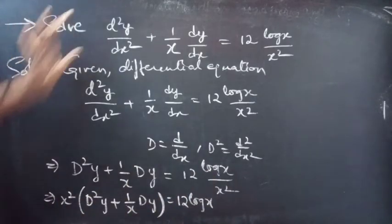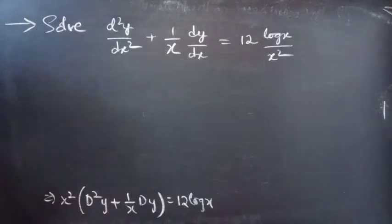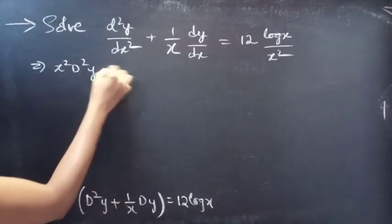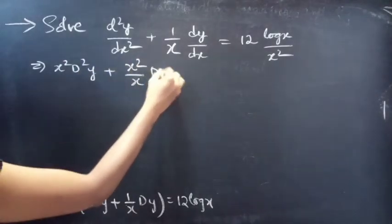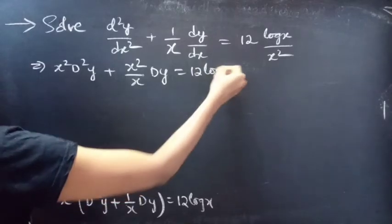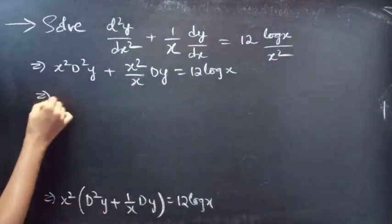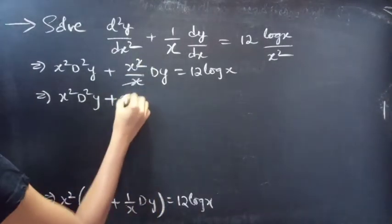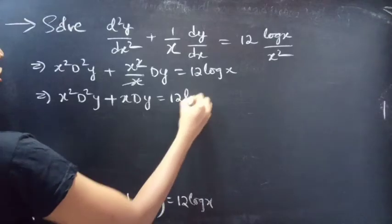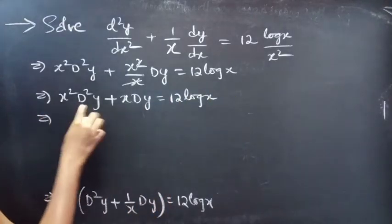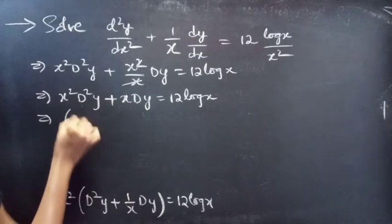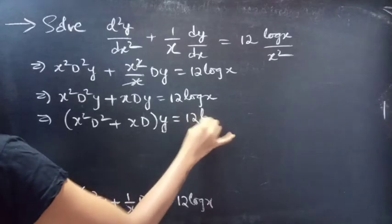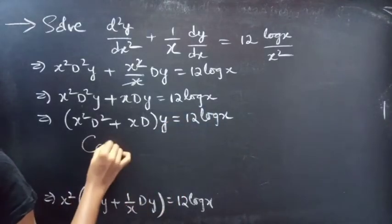We are going to reduce the given equation to Cauchy's equation. The equation becomes x²·d²y + (x²/x)·dy = 12·log(x). Then x²·d²y + x·dy = 12·log(x), since the x cancels in the second term. Taking y common from the two terms on the LHS, we get (x²·d² + x·d)·y = 12·log(x), which is Cauchy's equation.